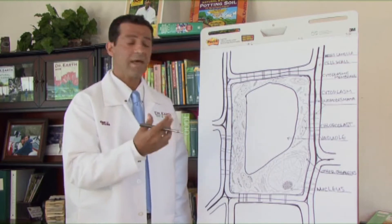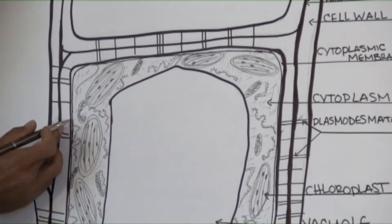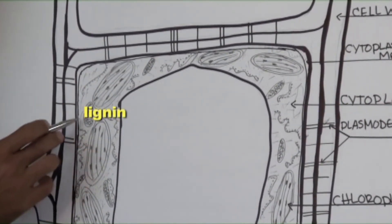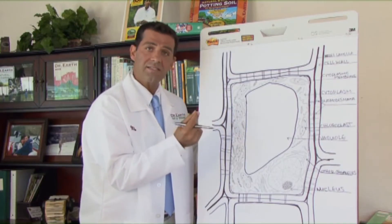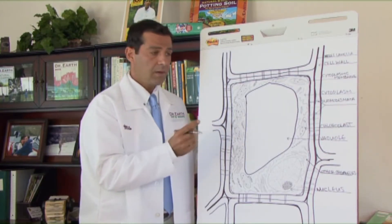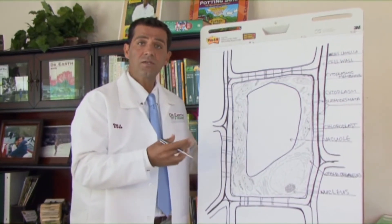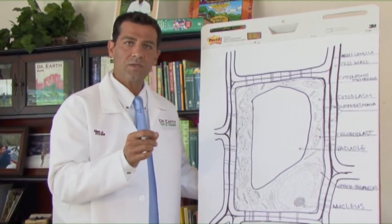This is the cell wall right here. There's a hardening agent that goes on the inside of the cell wall called lignin. It's the combination of cellulose and lignin that give the plant cell its structural integrity. When you build healthy plants and healthy cells, insects naturally want to gravitate away from those plants.